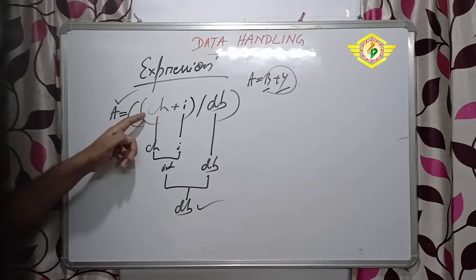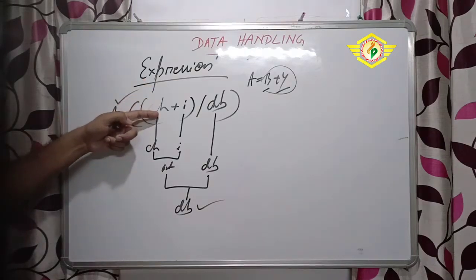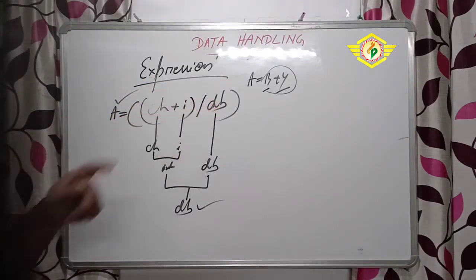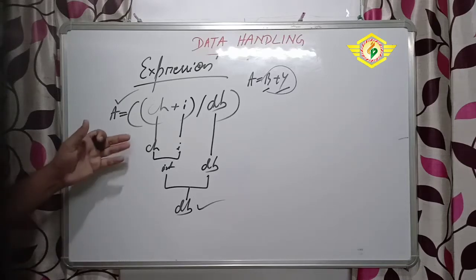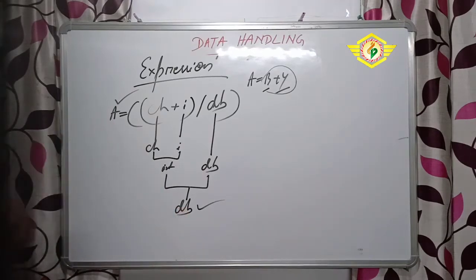So in this expression, suppose the expression contains one character, one integer and one floating value - the output must come as a floating type of value. In this way we can find out the type of data, means type of expressions, what type of expressions we are using for A that also we can find out.